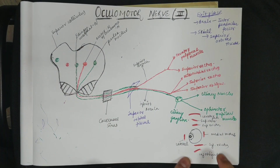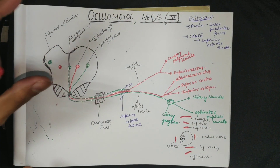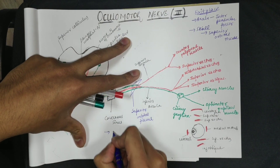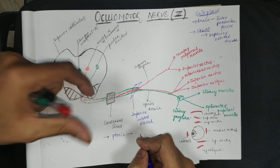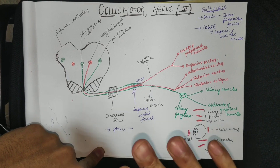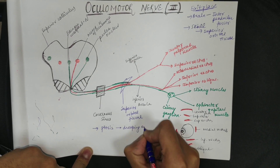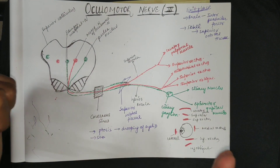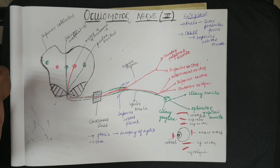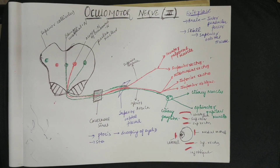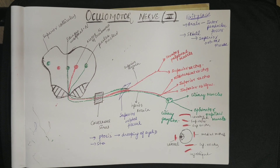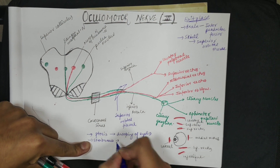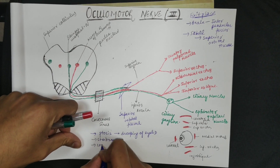If any type of paralysis occurs in the oculomotor nerve, the eyeball shifts towards the lateral position because the medial rectus is paralyzed. The clinical features of oculomotor nerve palsy include: first, ptosis — drooping of the eyelid, giving a lazy eye appearance. Second, strabismus — the eyeballs do not align in one position; one eyeball deviates laterally while the other remains in normal position.